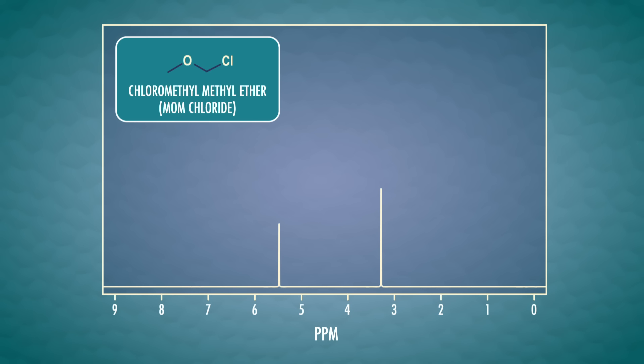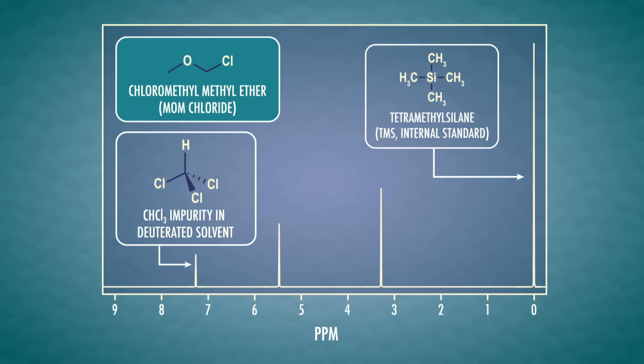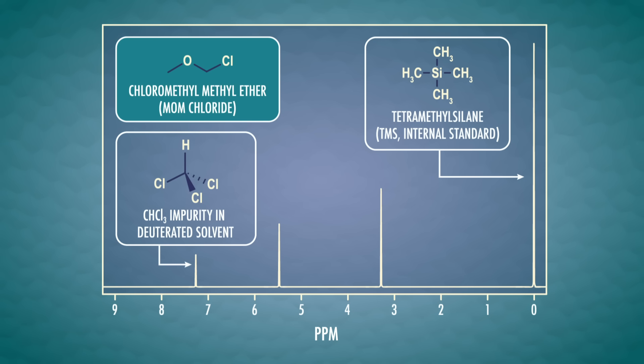This is the spectrum for chloromethyl methyl ether, or mom chloride to its friends. The x-axis is measured in ppm, which stands for parts per million. It has to do with the ratio between the radio frequency source and the energy required to cause the nuclei to flip spin. The process of adding deuterium to solvents isn't perfect, so a few hydrogens from the NMR solvent show up as a peak, which we can use to set the scale of our NMR spectrum. Or we can include a standard chemical called tetramethylsilane, or TMS, in the sample, which produces a very strong signal. Basically, the standard provides a comparison point for the other peaks. It's a bit like measuring times against GMT.